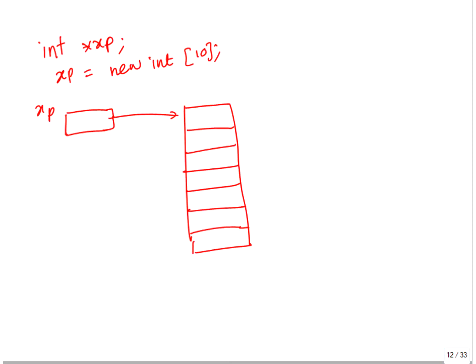Now, at this point, if you do xp++, since it's a pointer to integer, that address is going to go up by 4 bytes — it's going to go up by 4 so that it points to the next one. So then xp is going to point to the next item. If you do xp++ again, it's going to point here. So this address keeps changing. Whatever address is stored in xp keeps having 4 added every time, so that it can point to the next integer properly.